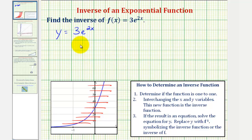And now to find the inverse function, we interchange the x and y variables. And therefore the inverse function would be x equals 3 times e raised to the power of 2y.